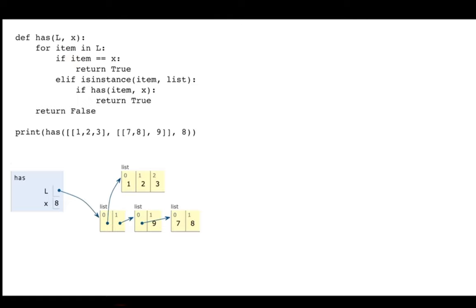I'm going to loop over everything in the list. If the thing I'm looping over is exactly what I want, problem solved — I return true and I'm done. Otherwise, if it's not what I want but the item happens to be a list, I make a recursive call: maybe I don't directly contain it, but a sublist might. I loop over all items doing both these checks — either a direct check or a recursive check — and if I've looped over everything and can't find it, I return false.